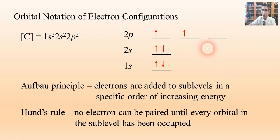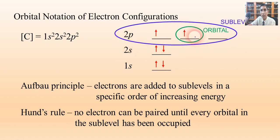Now before we go any further, just some vocabulary here. The 2p, for example, that's a sublevel. This whole thing is a sublevel, but each line represents an orbital. Every orbital can have a maximum of two electrons.